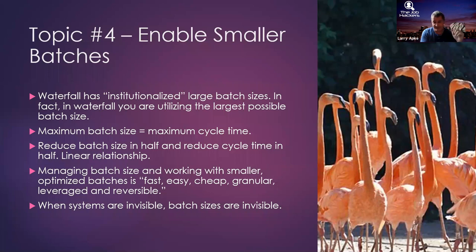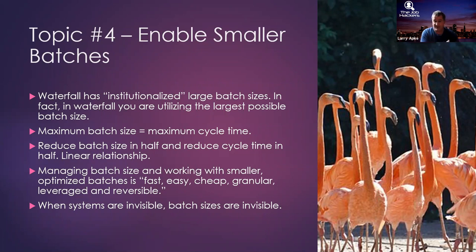Managing batch size has several characteristics: it's fast — if I have a batch size of 10 and I want to change it to five, that's a pretty easy and fast decision. It's cheap — it doesn't cost much to change batch sizes in most cases. It's granular — I could change it to five, six, or seven. It's leveraged in the sense that changing batch size will change cycle time. And it's reversible — if I go from 10 to five and find that somewhere in between is optimal, I can go back.